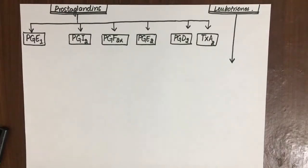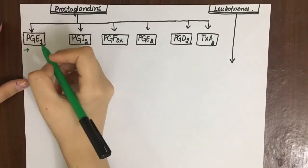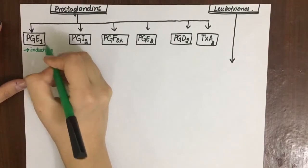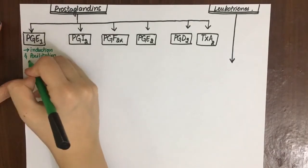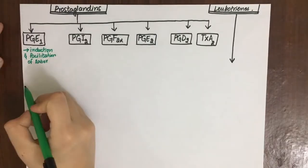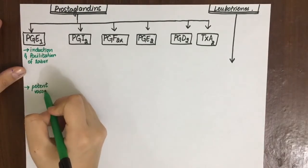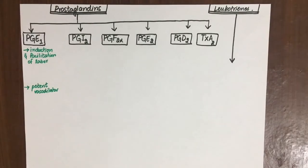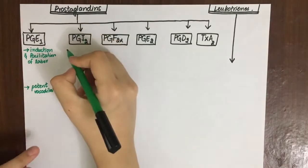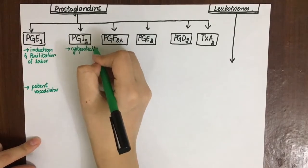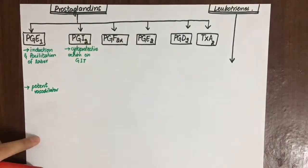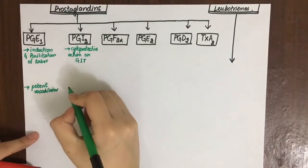We are going to talk about each prostaglandin formed from COX-1 or COX-2 in detail. I'll use the green marker for actions we want and red for what we don't want. PGE1 makes the cervix favorable for induction and facilitation of labor and is a potent vasodilator. PGI2 is cytoprotective for GIT - it reduces GI secretions and increases mucus secretion, thus preventing ulcers. It also has a vasodilatory effect.